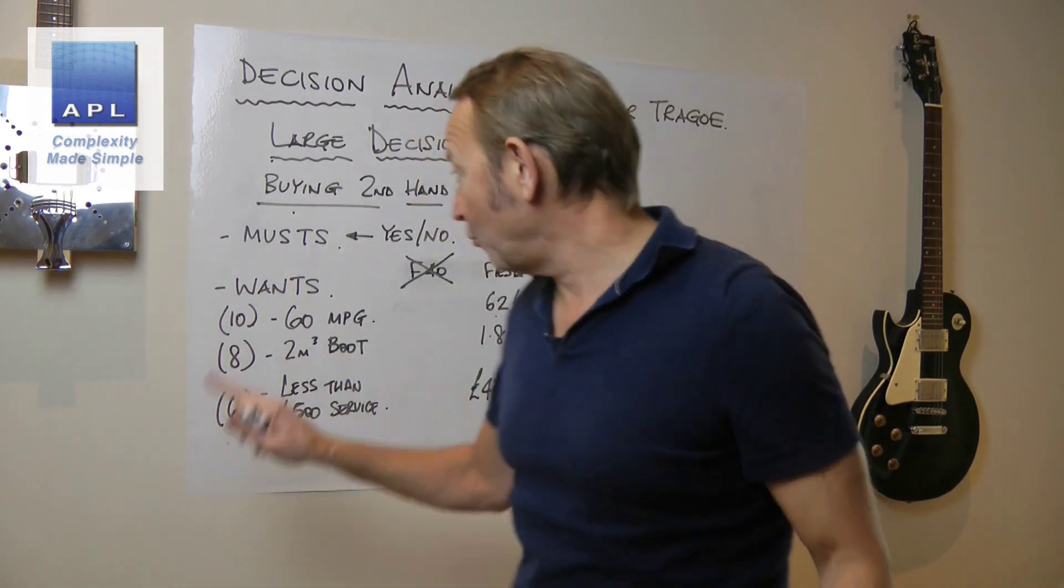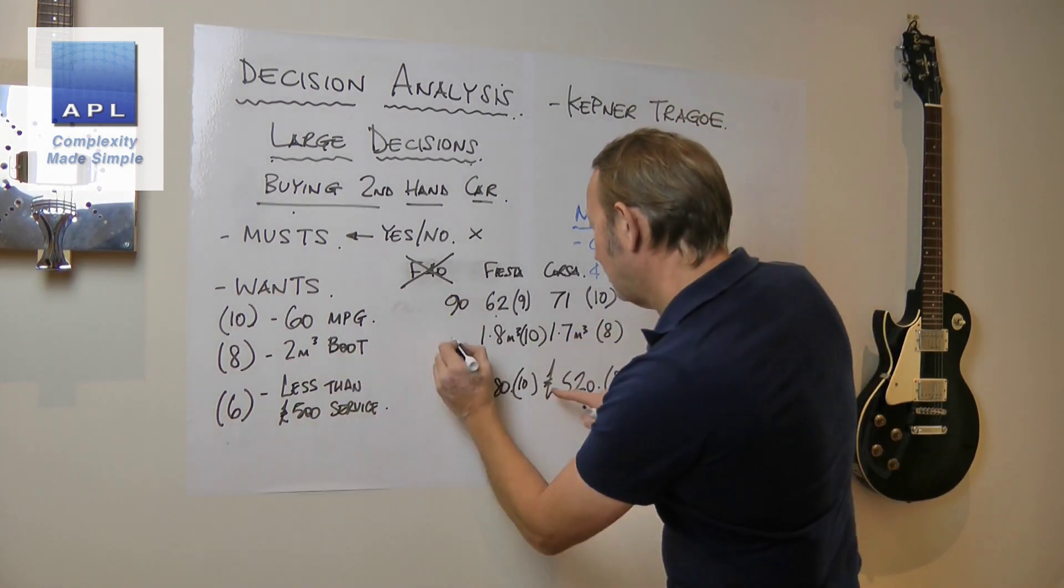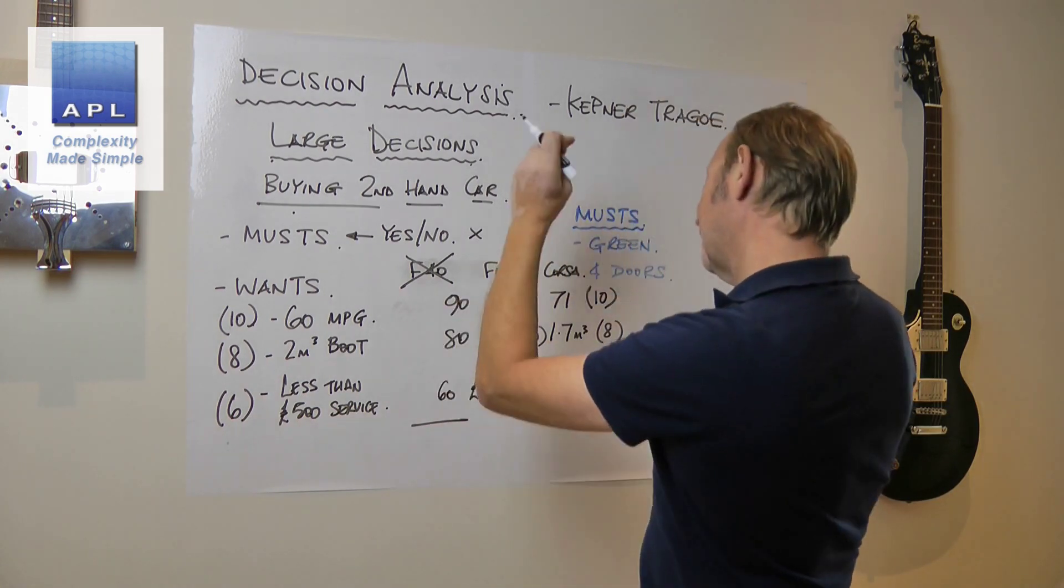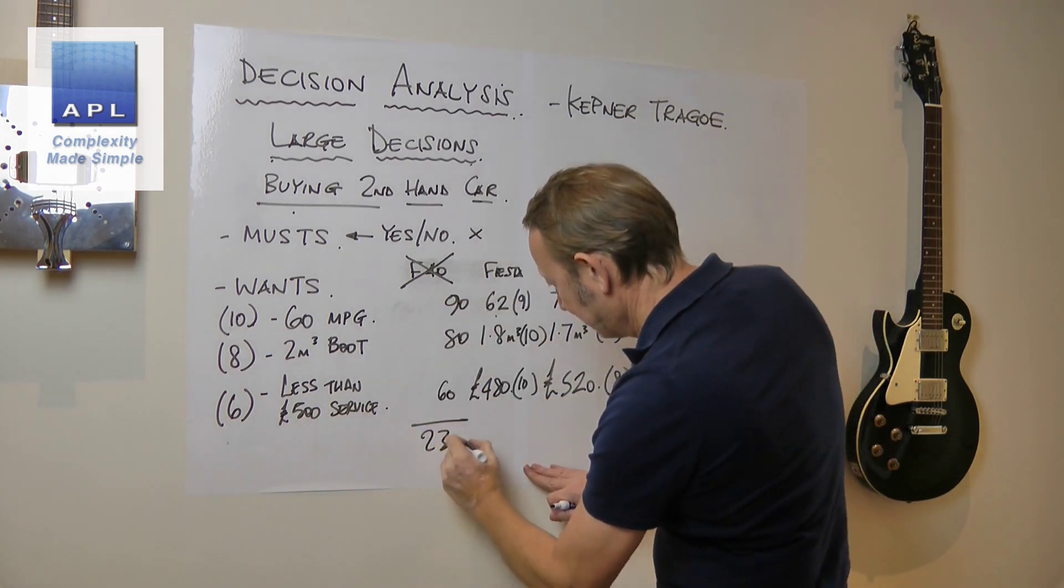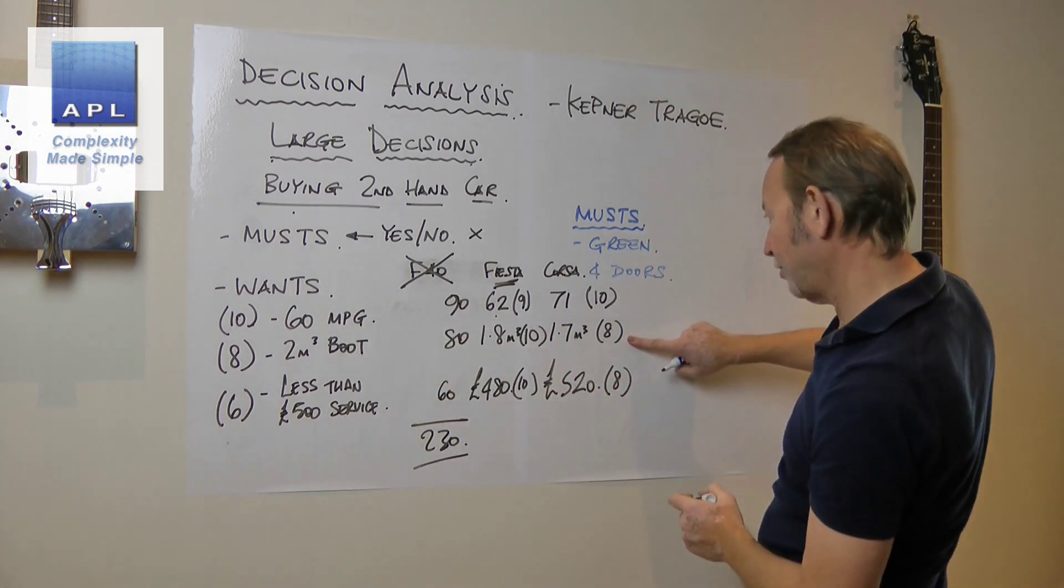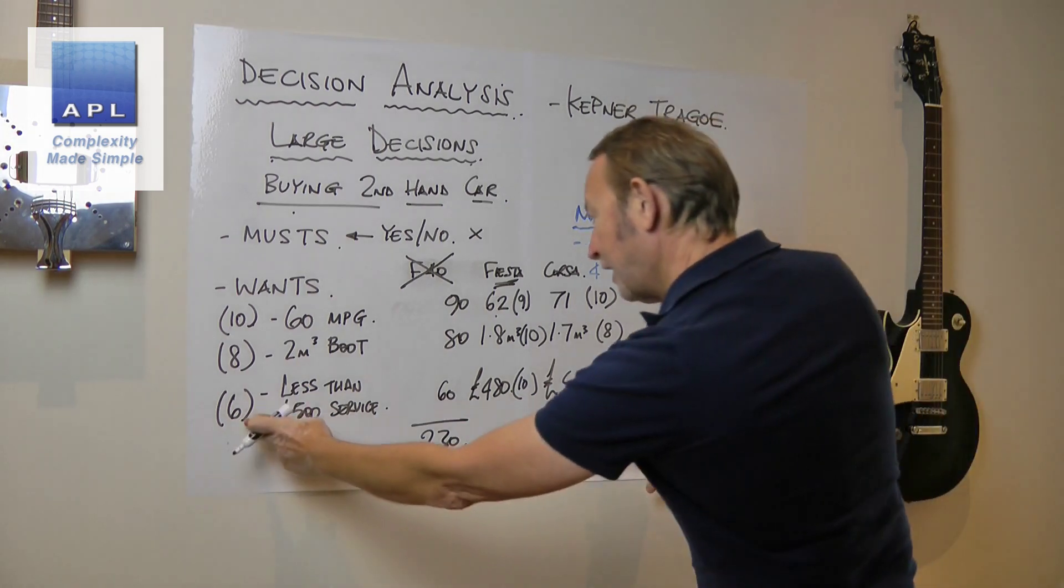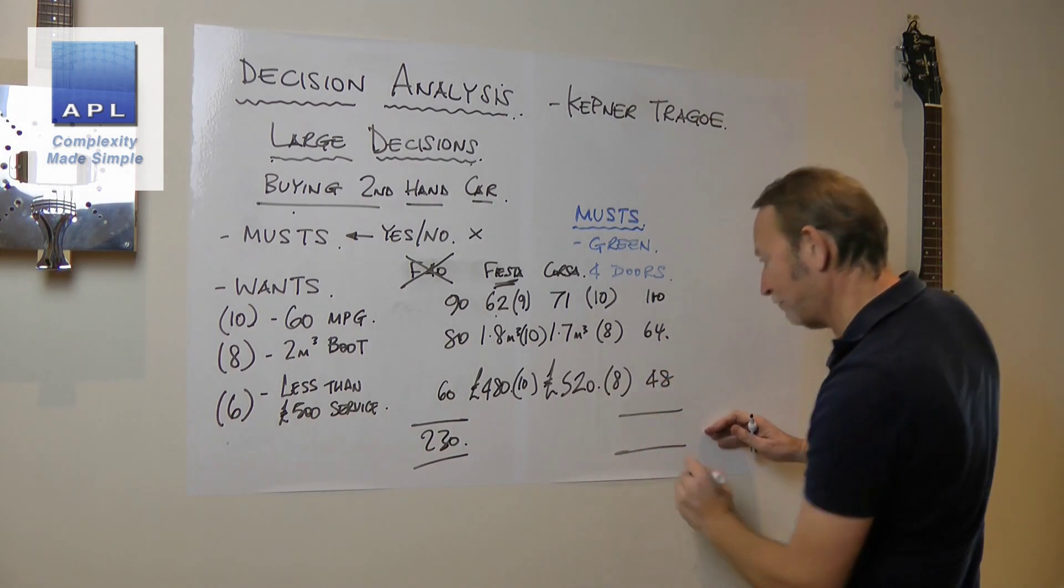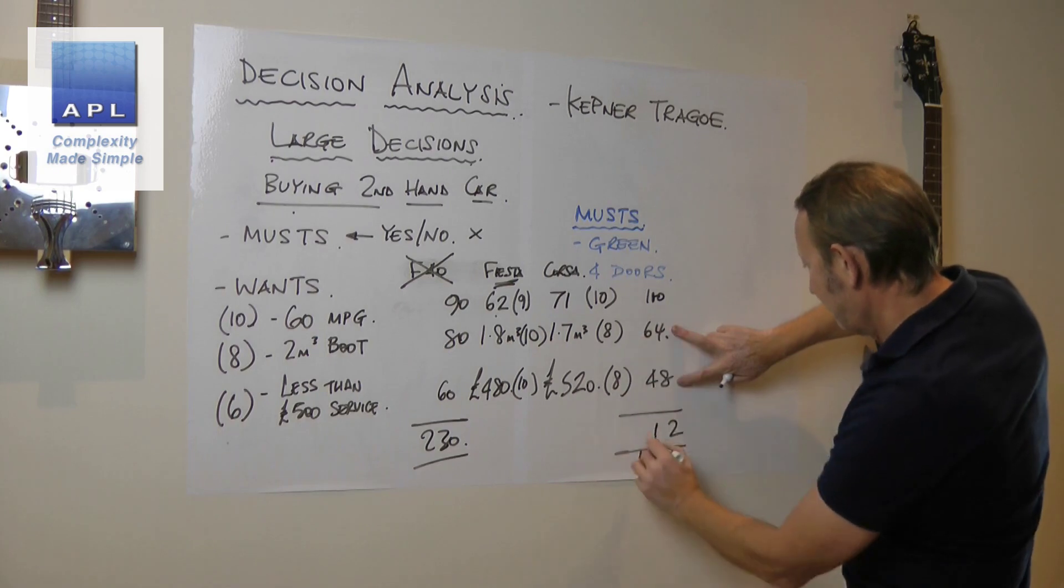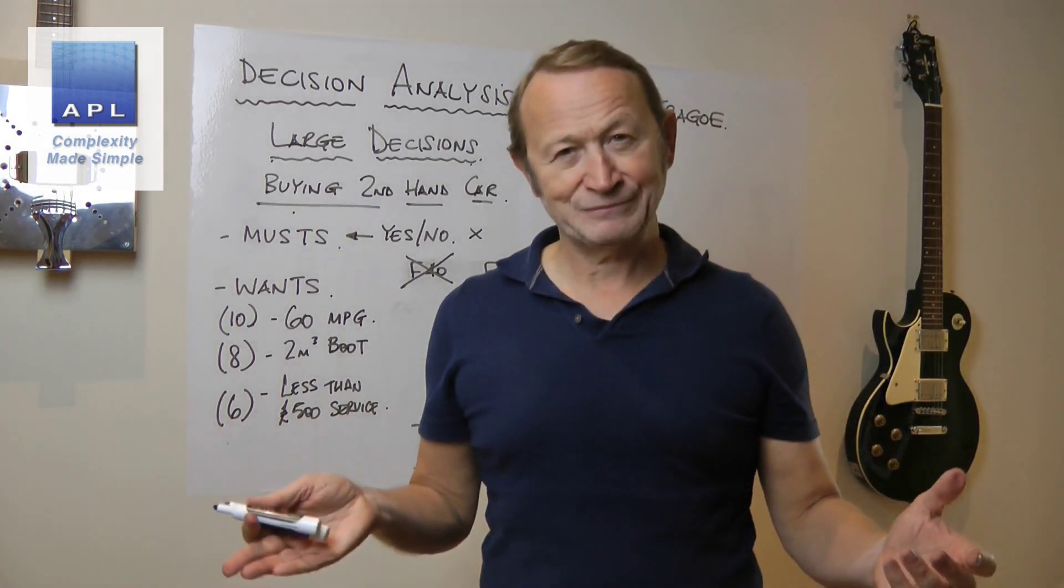Now we do a very simple thing - we multiply the weighting by the score. For the Fiesta, that's 90 plus 80 plus 60, which equals 230. For the Corsa, 10 times 10 is 100, plus 64, plus 48, which equals 212. What's my decision? I'm going to buy the Fiesta.